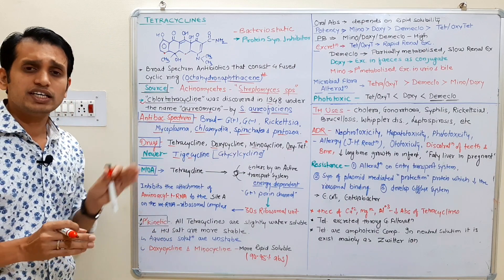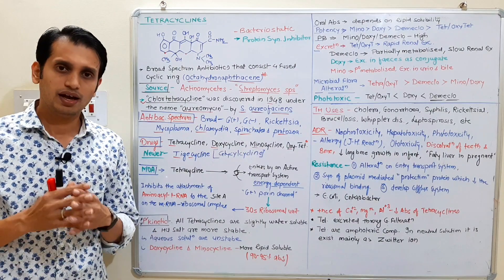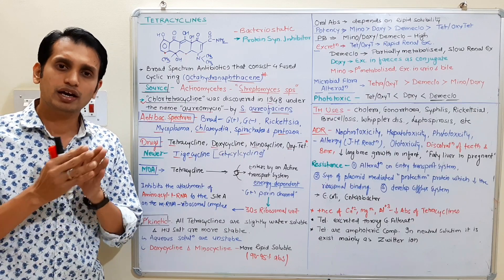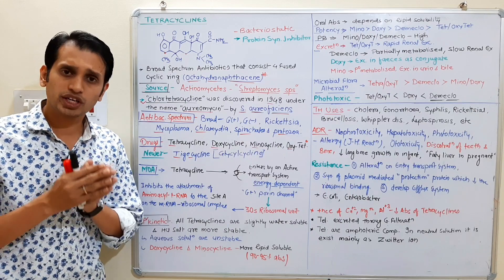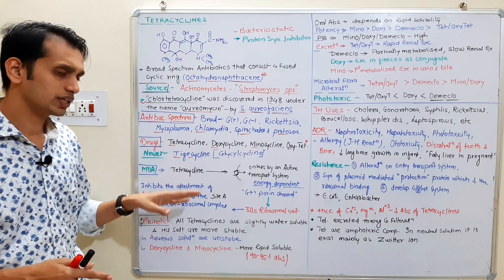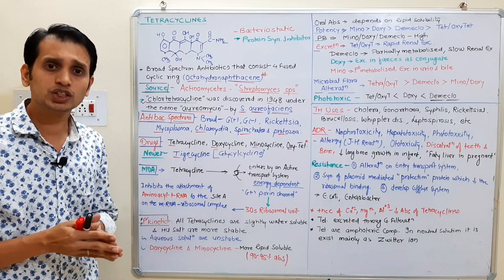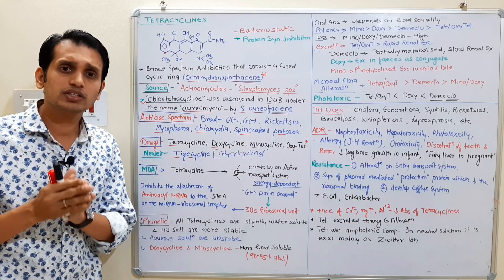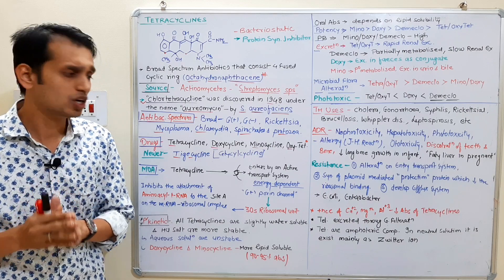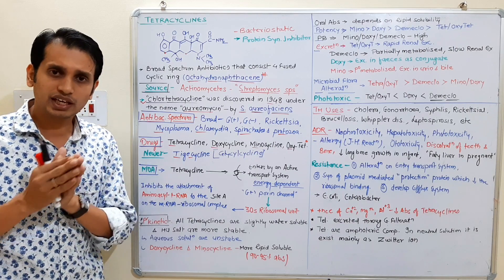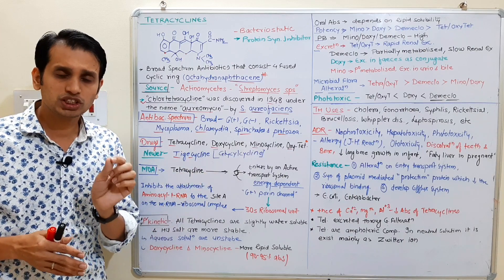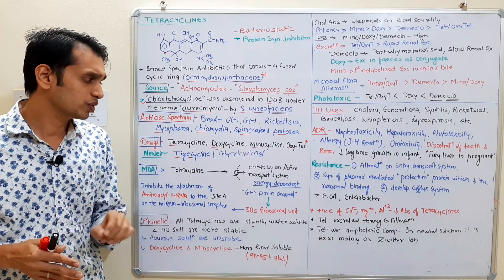Now come to the mode of action of tetracyclines. We have already talked about the mode of action of various protein synthesis inhibitors in previous videos. Tetracycline diffuses into the cell by a specific transport system — that is an active transport system, meaning an energy-dependent transport system.